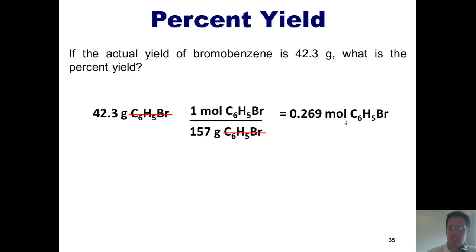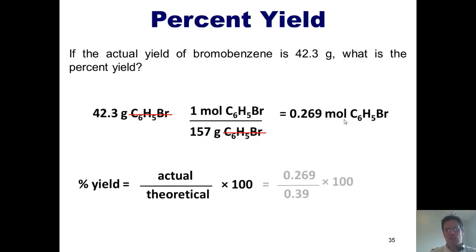So once again, we calculated, in this particular circumstance, we should have gotten 0.39 moles of bromobenzene. But all we got was 0.269 moles of bromobenzene. What's my percent yield? Well, percent yield is actual divided by theoretical. In this particular case, I actually got 0.269 moles, and I should have theoretically gotten 0.39 if everything went perfect. I divide one by the other, times it by 100, and I get a 70% yield.